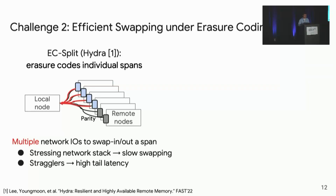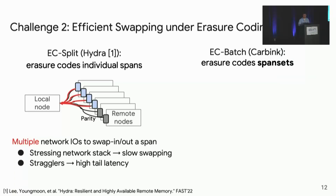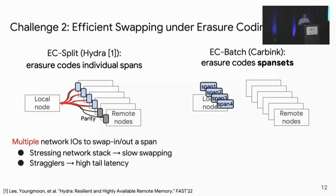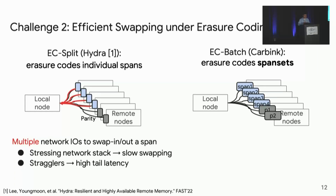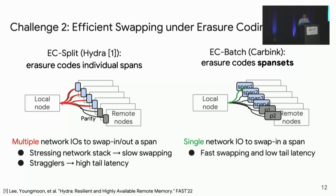With this drawback, we asked: can we avoid splitting spans? This is achieved in our new approach called EC Batch, which performs erasure coding on span sets. A span set is a group of equal-sized spans. We swap out a batch of four equal-sized spans along with their parity to remote nodes. On average, each span swap-out only requires 1.5 I/O operations, and during swap-in, only a single network I/O operation is needed to fetch the specific span containing the desired object. This achieves fast swapping and low tail latency without vulnerability to stragglers.